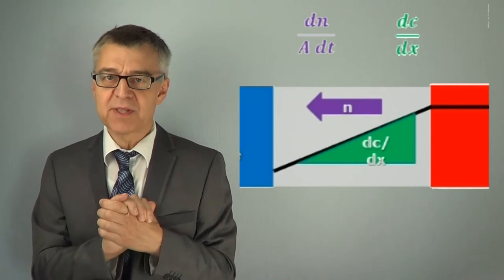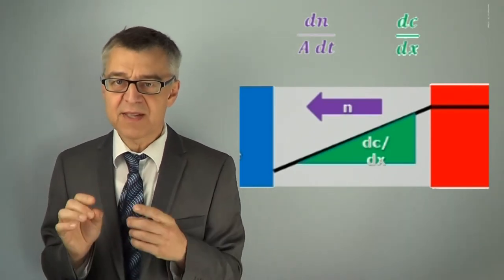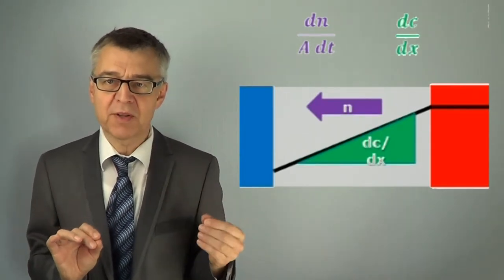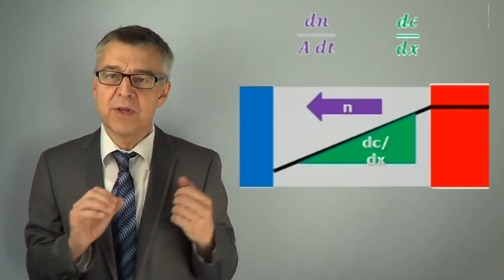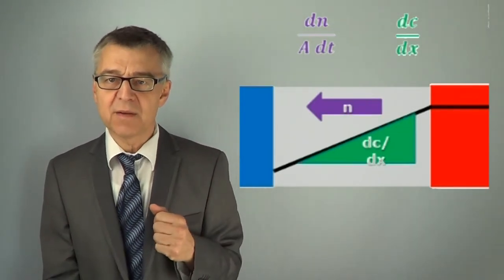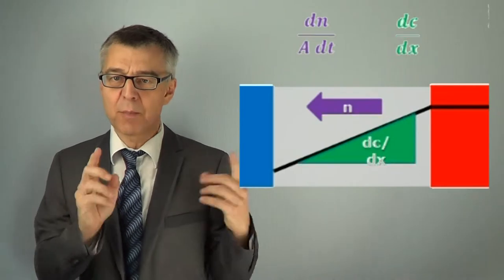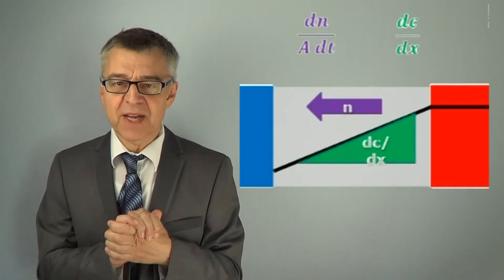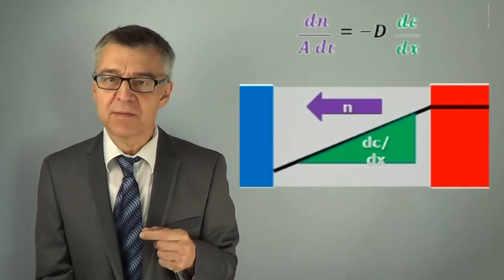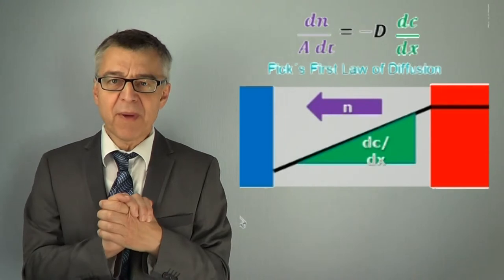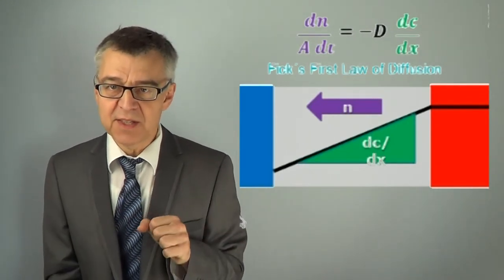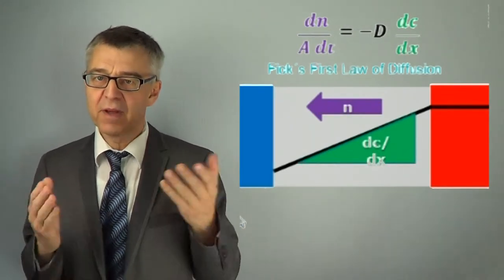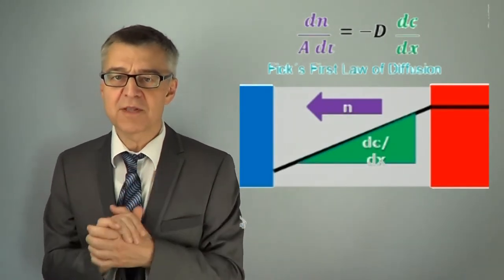The rate of the transport is described by the flux density, in this case the molar flux density. The number of moles transported through an area A per unit time, dN over A dt. Flux density is proportional to the concentration gradient. The proportionality factor is D, the diffusion constant. Due to mathematical convention, a negative sign is needed. Transport proceeds towards the negative slope of the curve, and this is Fick's first law of diffusion.